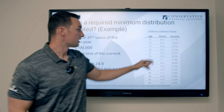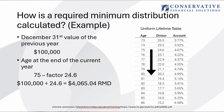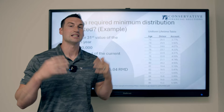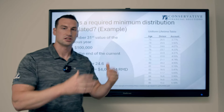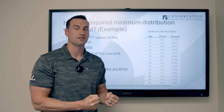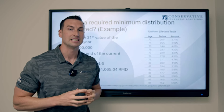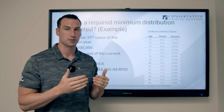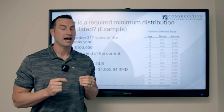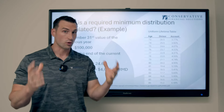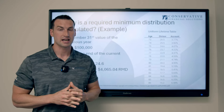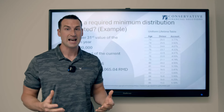Notice that this factor decreases each year, meaning the distribution percentage increases each year. So the likely scenario is that your required minimum distribution will increase each year. There are some factors — like if your account balance drops enough — where the RMD might be less. But for most families, they will actually see an increase in their RMD each year, and the more you take out from that pre-tax retirement account, the more you'll owe in taxes.